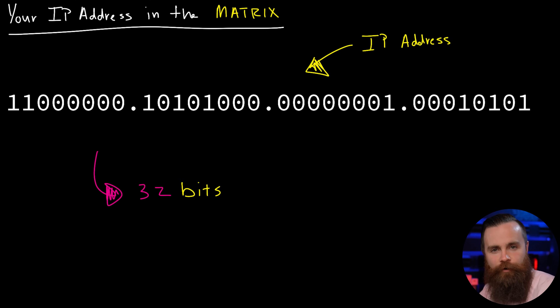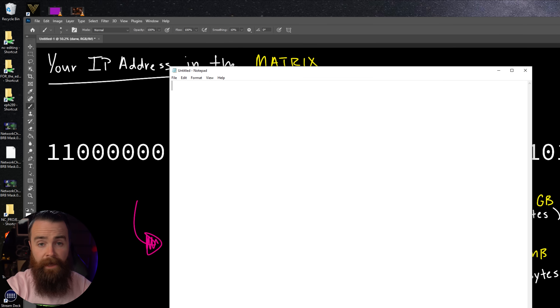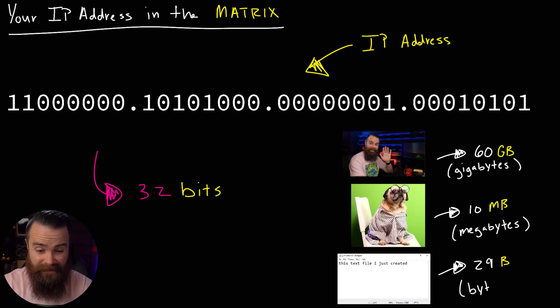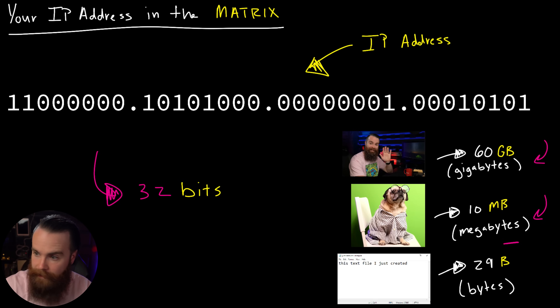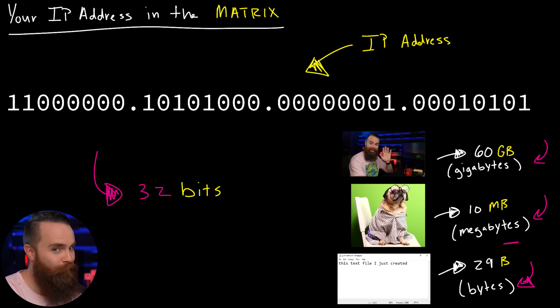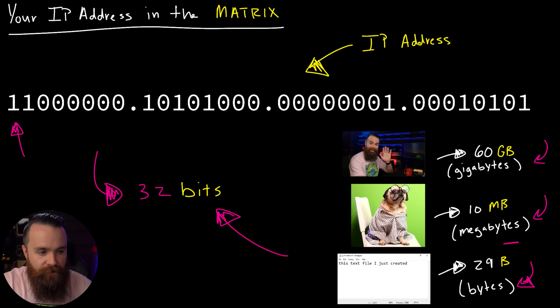What does that mean? Well, in computers, everything has a size. This video I'm recording is 4K and will likely be about 60 gigabytes. This picture is about 10 megabytes. And this text file I just created is 29 bytes. We're going down in size - from gigabytes to megabytes, all the way down to bytes. But we can go even lower, even smaller than bytes: we can go from bytes to bits. And that's what we're seeing here - each of these digits are bits, the ground floor, as low as we can go in computer storage.